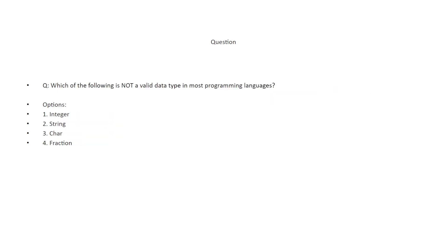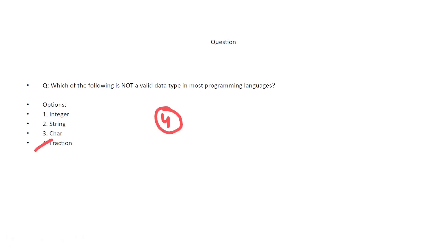Which of the following is not a valid data type in most programming languages? The options are: integer, string, char, and fraction. The correct answer is option 4 — fraction. Fraction is not a standard data type in programming languages; the other common data types are integer, string, and character.